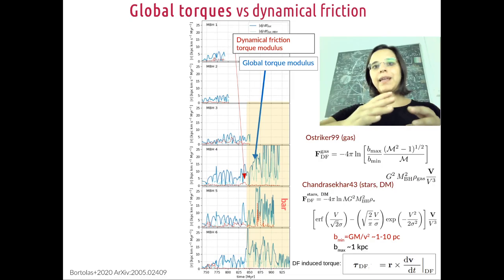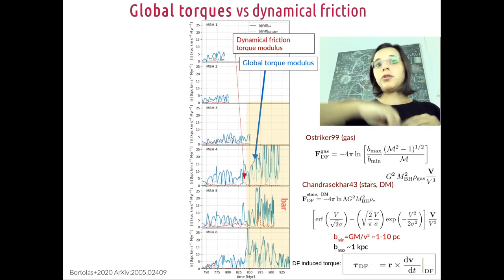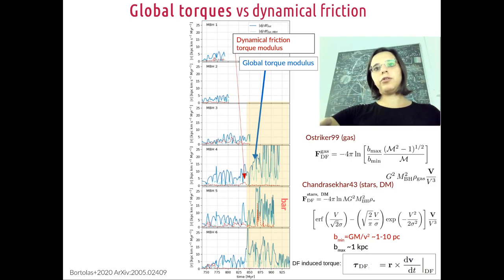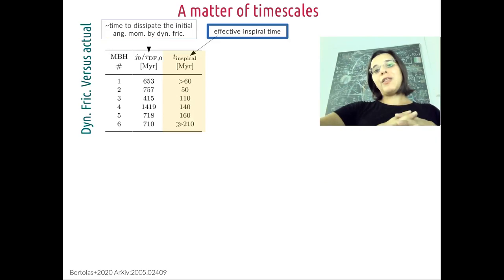And the really striking thing is that at the moment the strong bar forms, roughly at time 850 million years, then you see these global torques shooting up, meaning that the bar has a crucial impact in the evolution of our secondary massive black holes.